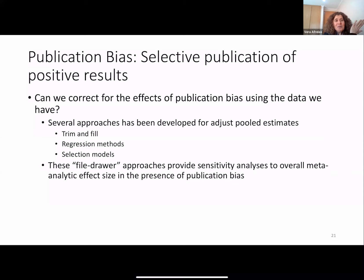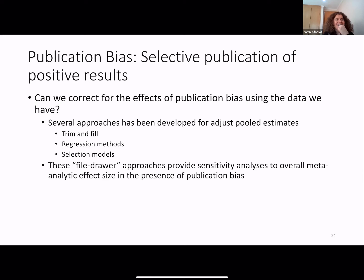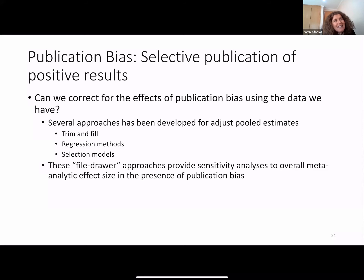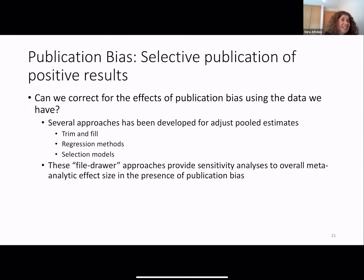Can we correct for the effects of publication bias using the data we have? Several approaches have been developed for adjusting estimates: trim-and-fill, regression methods, and selection models. The file drawer approach provides sensitivity analysis. In fact, sensitivity analyses provide the correction — maybe.